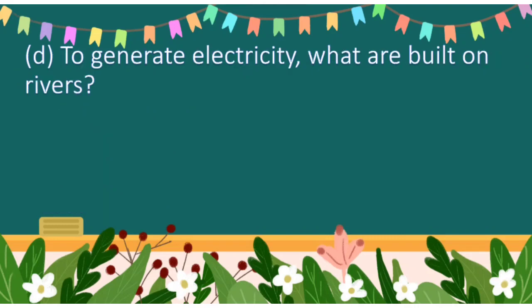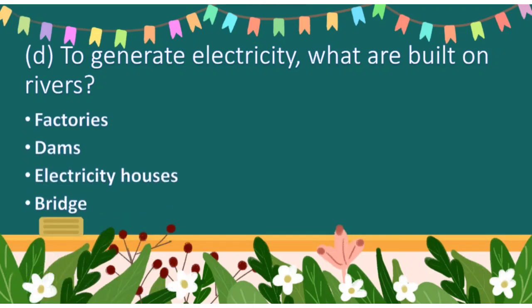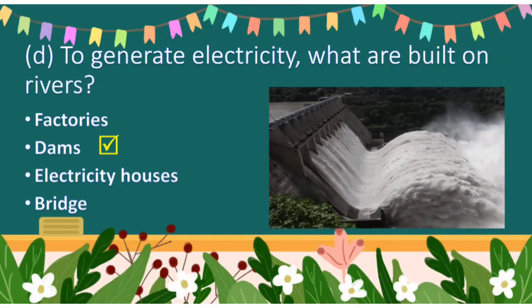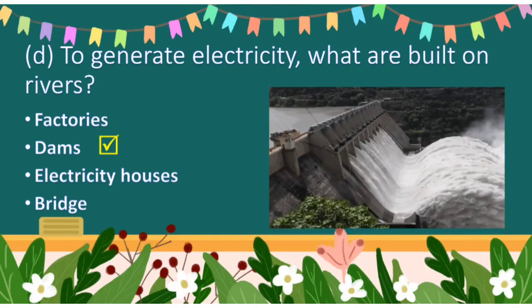Next question: to generate electricity, what are built on rivers? We have read it in the chapter. Let's see the options first — factories, dams, electricity houses, or bridge. Yes children, can you tell me? Very good — dams are built on rivers to generate electricity.